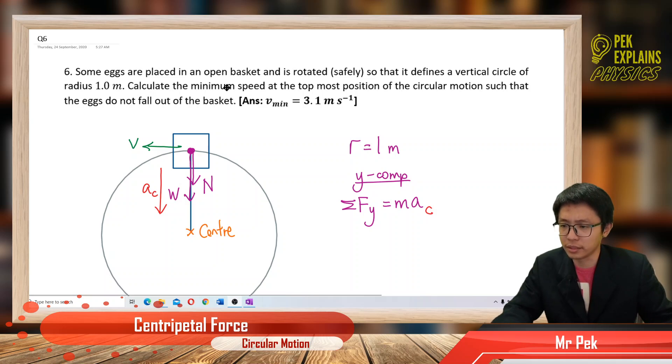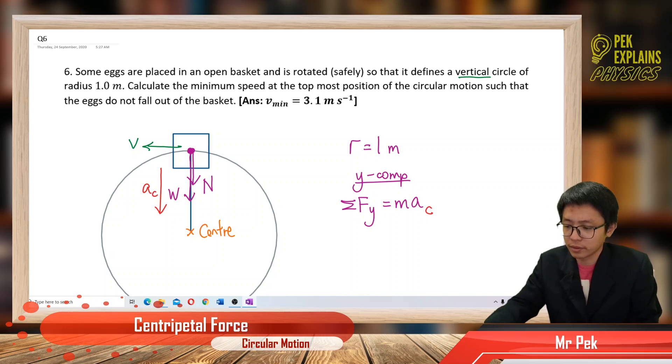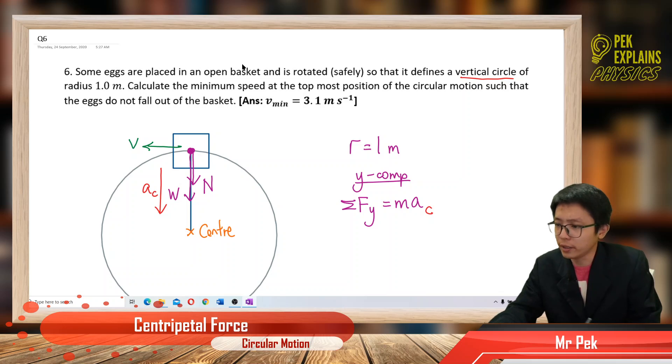This is a vertical circle question. We have top position, bottom position, this is a vertical circle. We have the radius here, radius r. It asks us to find a minimum speed, minimum speed at where? At the top.